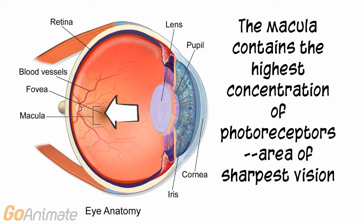The fovea centralis contains a central area called the macula. The macula contains the largest concentration of photoreceptors, and the area of sharpest vision occurs here.